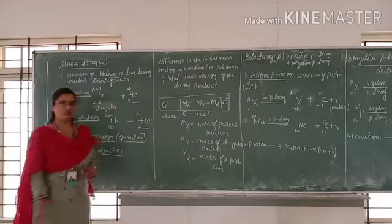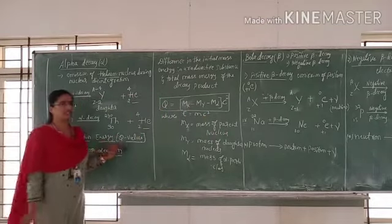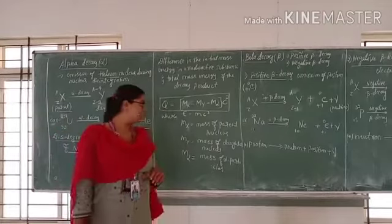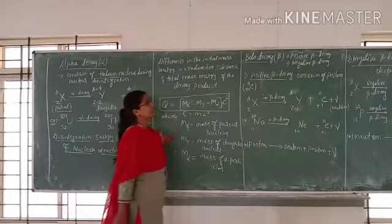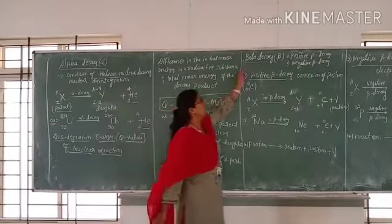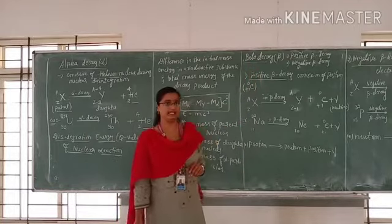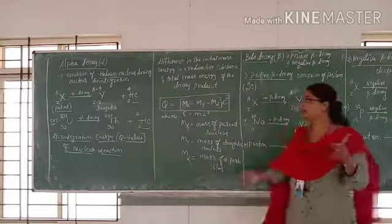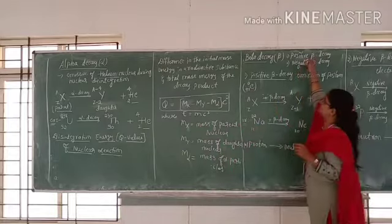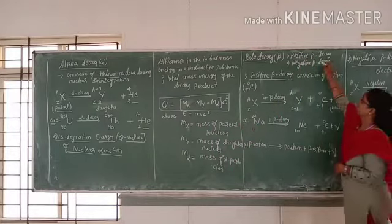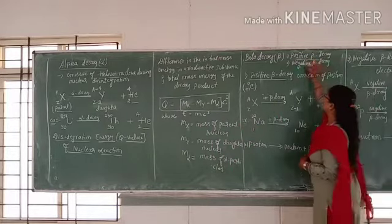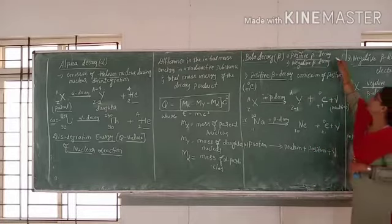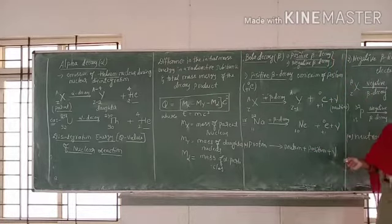Now we have another decay — beta decay. In beta decay, we have two types: the first one is positive beta decay and the second one is negative beta decay.